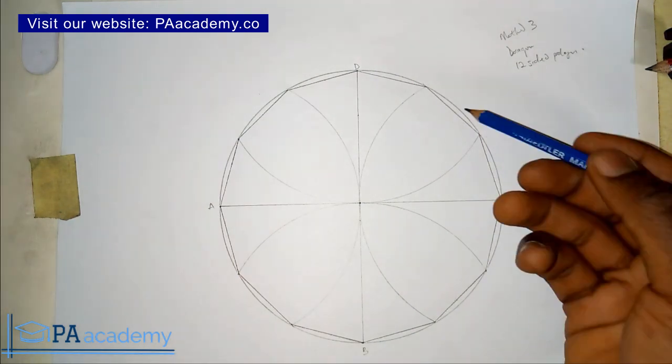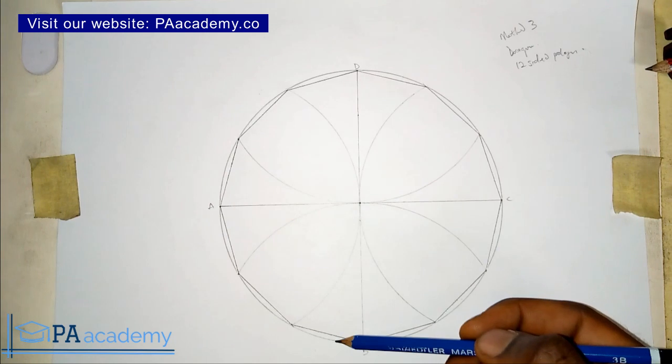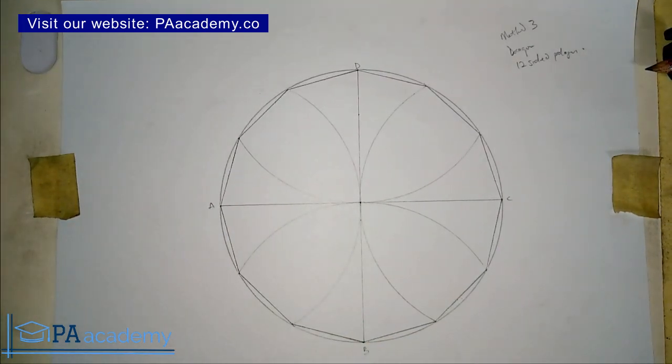With that, we are going to be having a dodecagon with 12 sides. This is one, two, three, four, five, six, seven, eight, nine, 10, 11, and then 12. So you can see we have 12 sides. This is the third method of drawing a dodecagon.